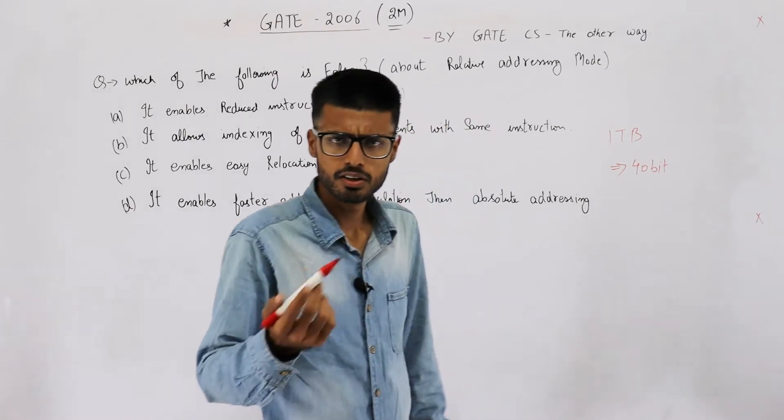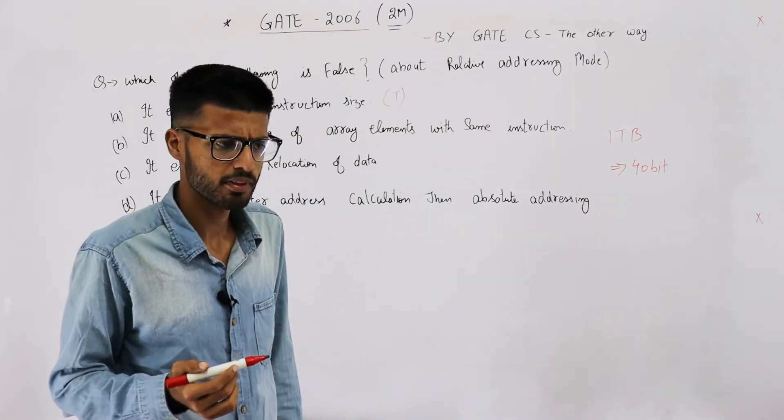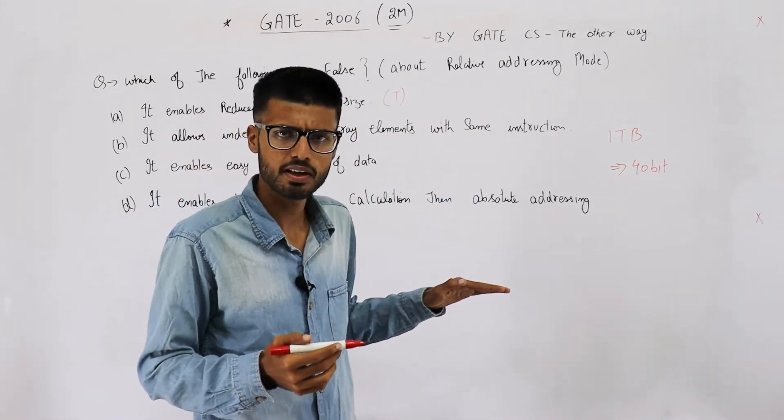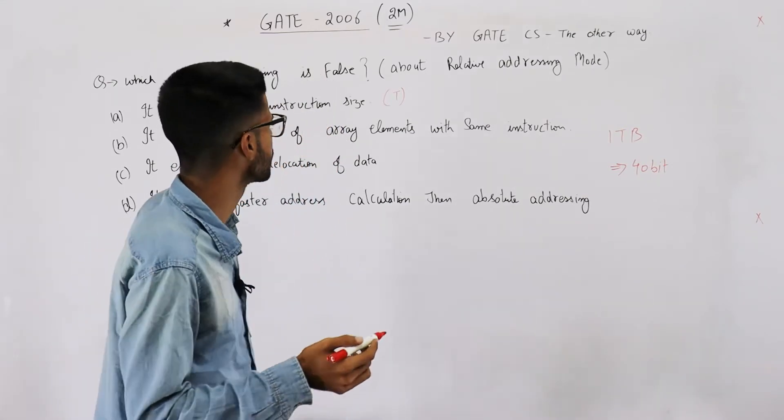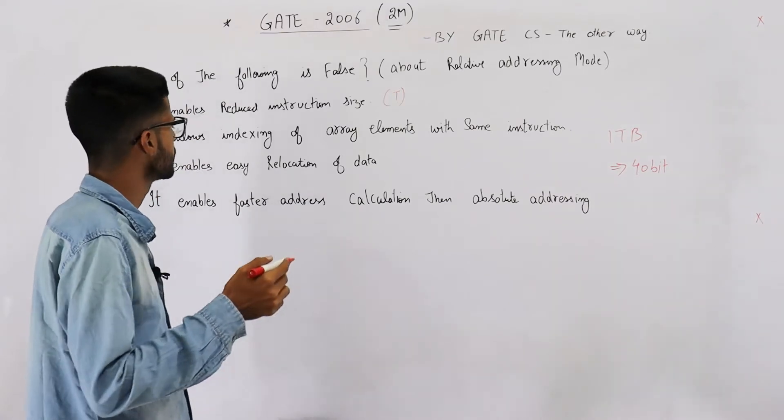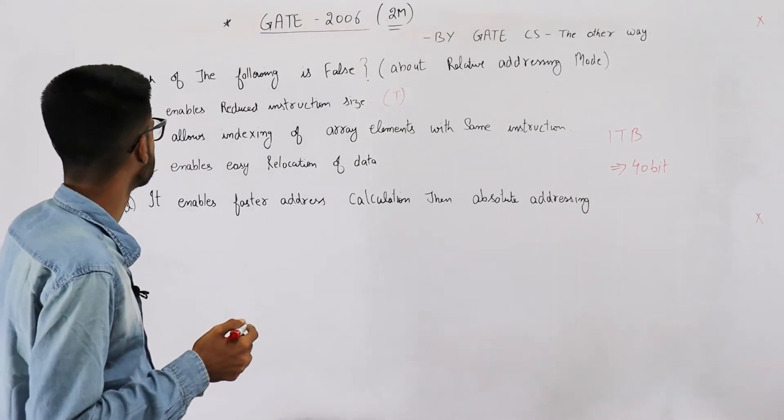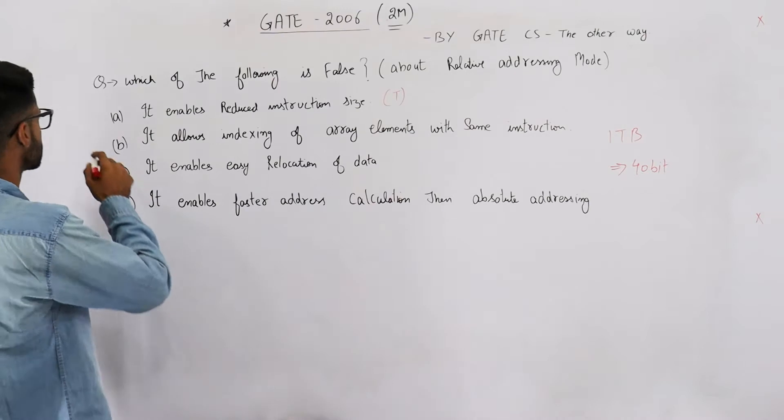use PC relative addresses because you just need to specify how far your required address is from the current instruction. Or you can even use register relative instead of PC relative. Anyways, this one is true.